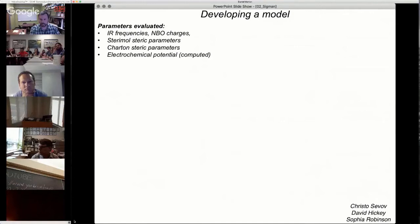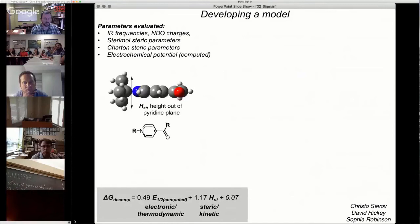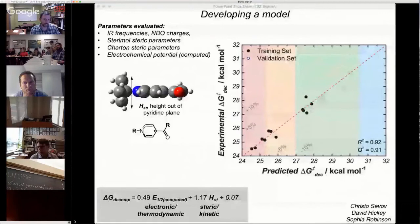What we did next is hypothesize that there was another parameter that we weren't understanding. You'll see that the equation at the bottom is the one we get to work. It has this parameter, h, height out of plane of the piperidine ring. Basically, it's like a buried volume. What this allowed us to do is have an equation where you can take the computed E1/2 and the height out of plane. This correlates very well to the data.